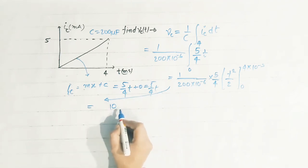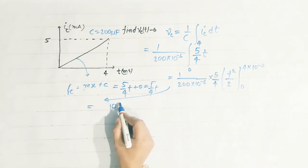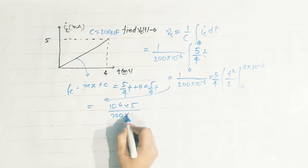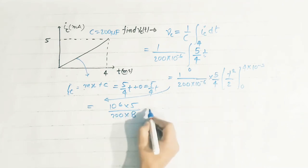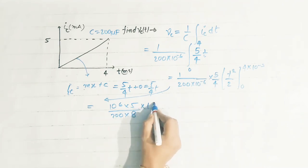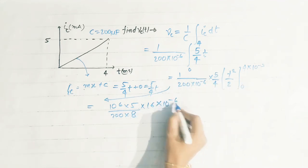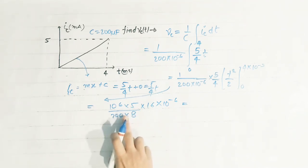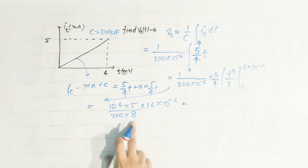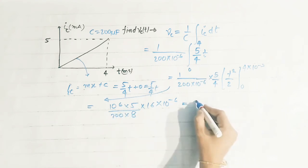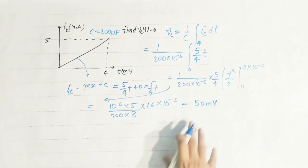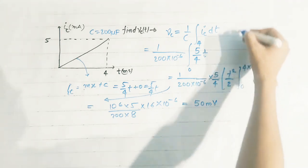On solving, we get 5 divided by (200 into 8 into 16) into 10 to the power minus 6. Simplifying this expression, we get a final voltage of 50 millivolts.